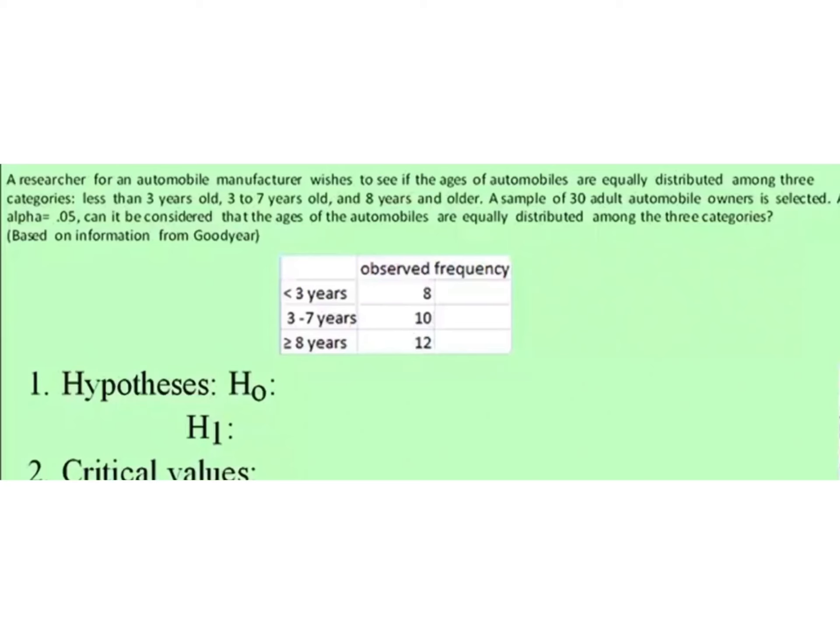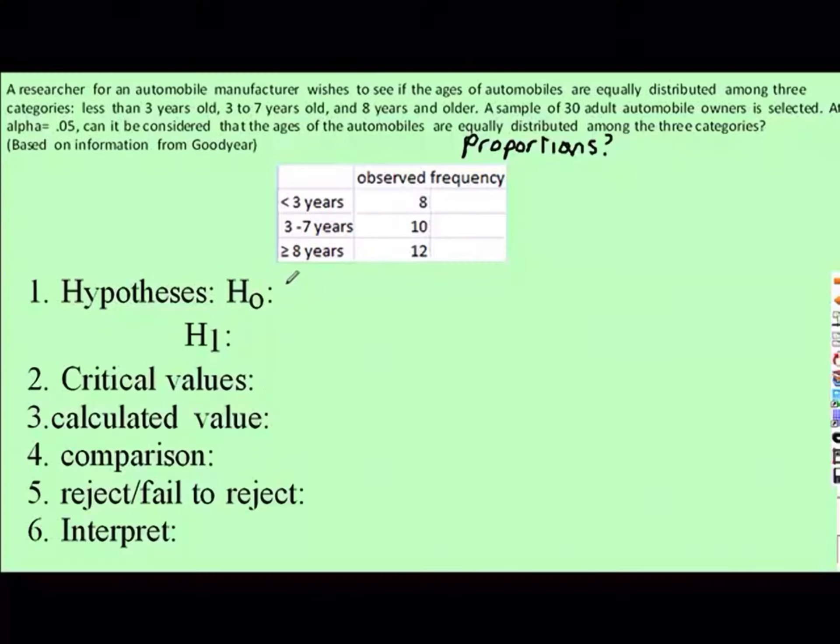In order to answer the question, we could and probably should say the null hypothesis is chi-square equals 0, and the alternative hypothesis H1 or Ha, chi-square does not equal 0. But sometimes that gets confusing, and it's easier to use words. The proportions are all equal for the automobile age. Then our H1 would be the proportions are not equal.